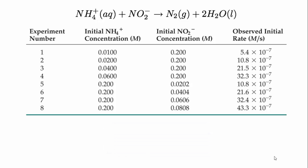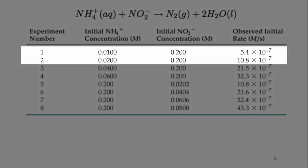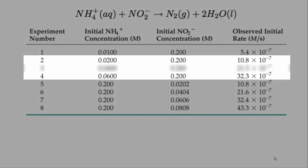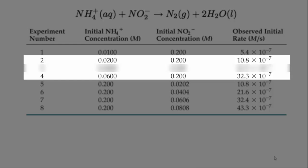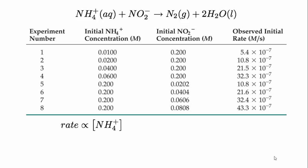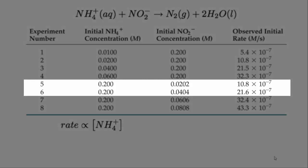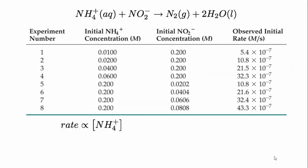Let's go through the data. Comparing experiments 1 and 2, the ammonium concentration was doubled while the nitrite was held constant, and the rate doubled. Looking at experiments 2 and 4, the ammonium concentration triples and the rate triples — though the rate value appears to not quite triple, which could be rounding or normal experimental scatter. Nevertheless, the data is good enough to say confidently that the rate is proportional to the concentration of ammonium. Next, looking at the nitrite ion: in experiments 5 and 6, the ammonium is held constant and the nitrite is doubled, and again the rate doubles. The rate is also directly proportional to the nitrite concentration.